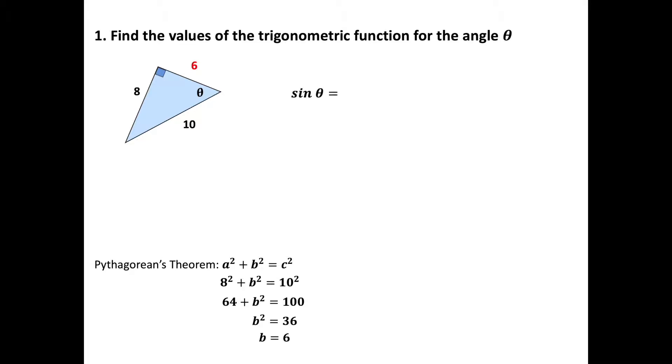Sine is equivalent to the opposite side over the hypotenuse, and it's all in relation to theta here. We've got sine of theta. That means the opposite side is going to be 8 divided by 10.